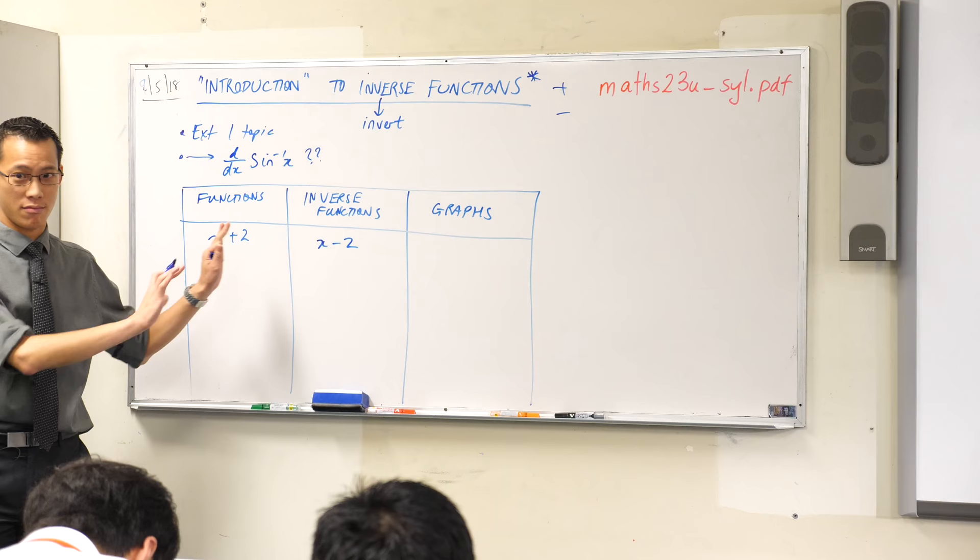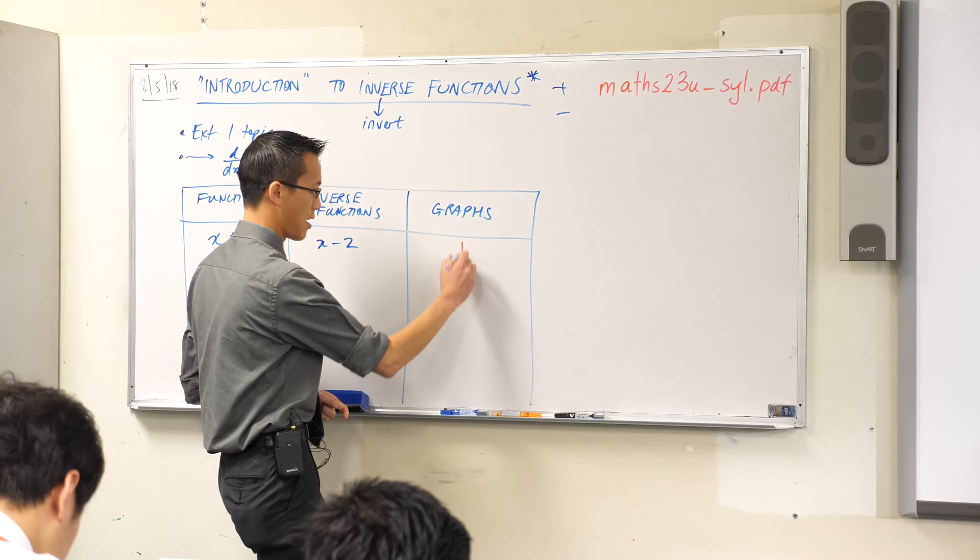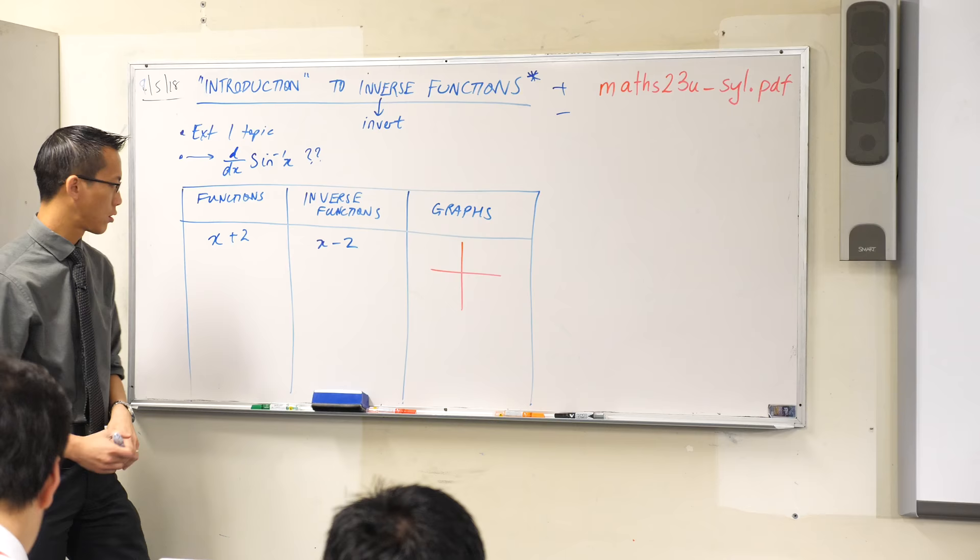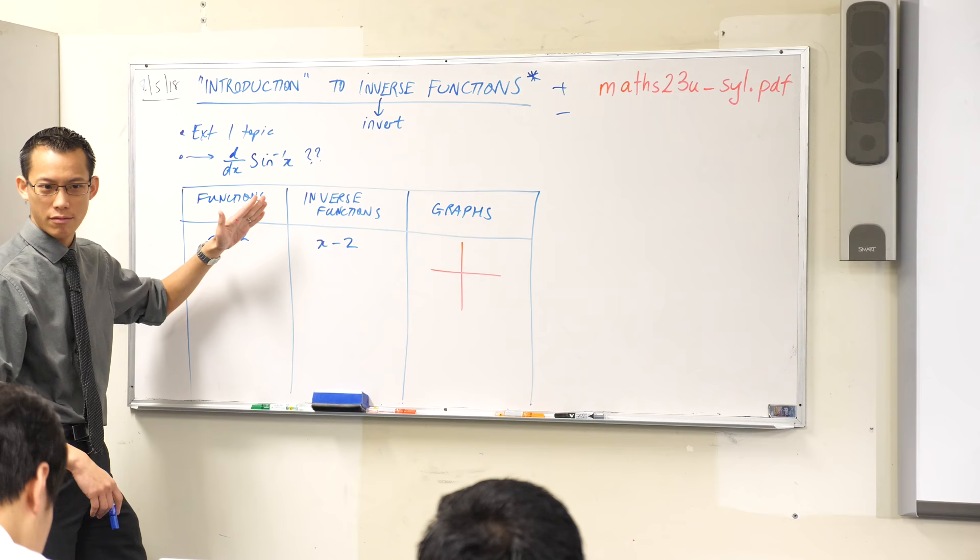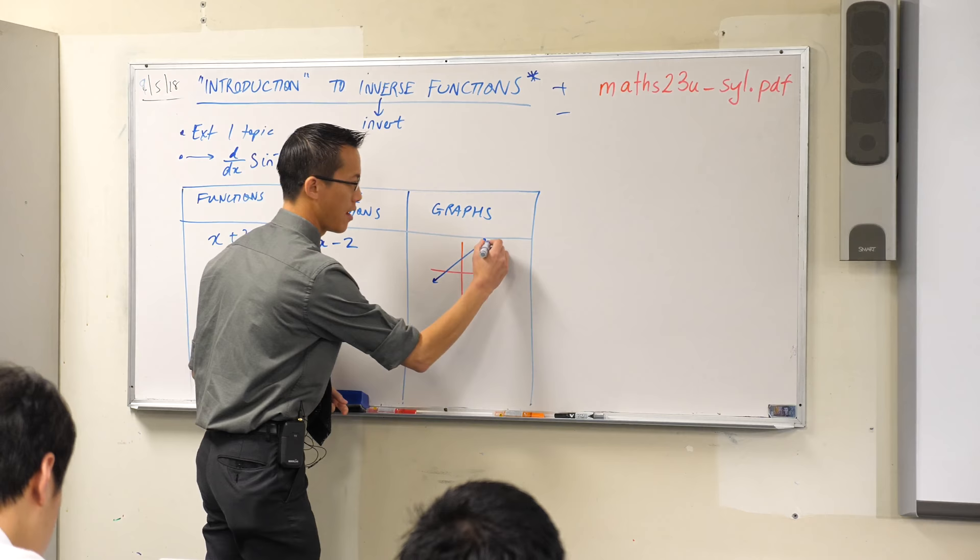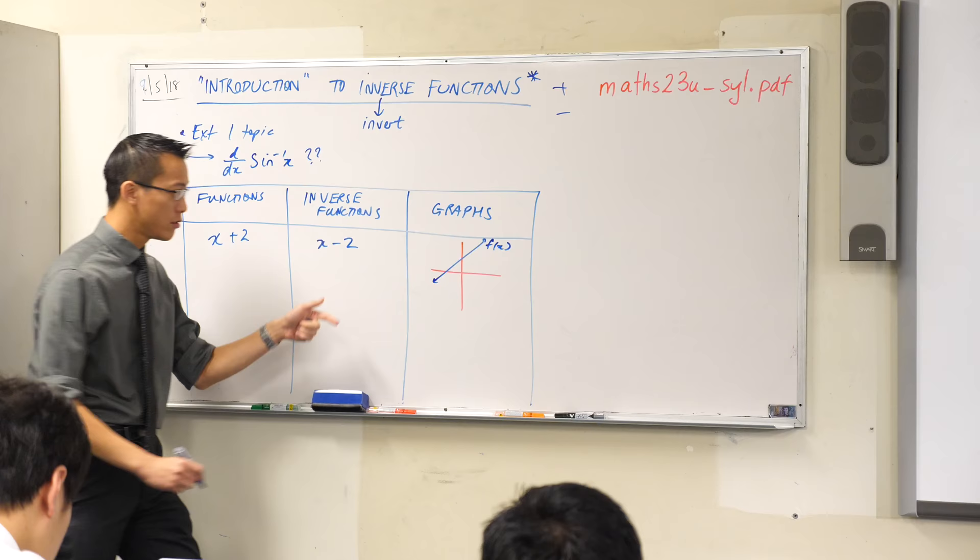Over on the right hand side here, let's just draw a really small Cartesian plane. What do each of these functions look like? Well, I know what x plus 2 looks like. It's going to be a straight line, gradient 1, and I'm going to shift it vertically upwards 2 units. So, there you go. That's what it looks like. There's f of x there. What does x minus 2 look like? Well, it's going to be very similar, but it's shifted down.